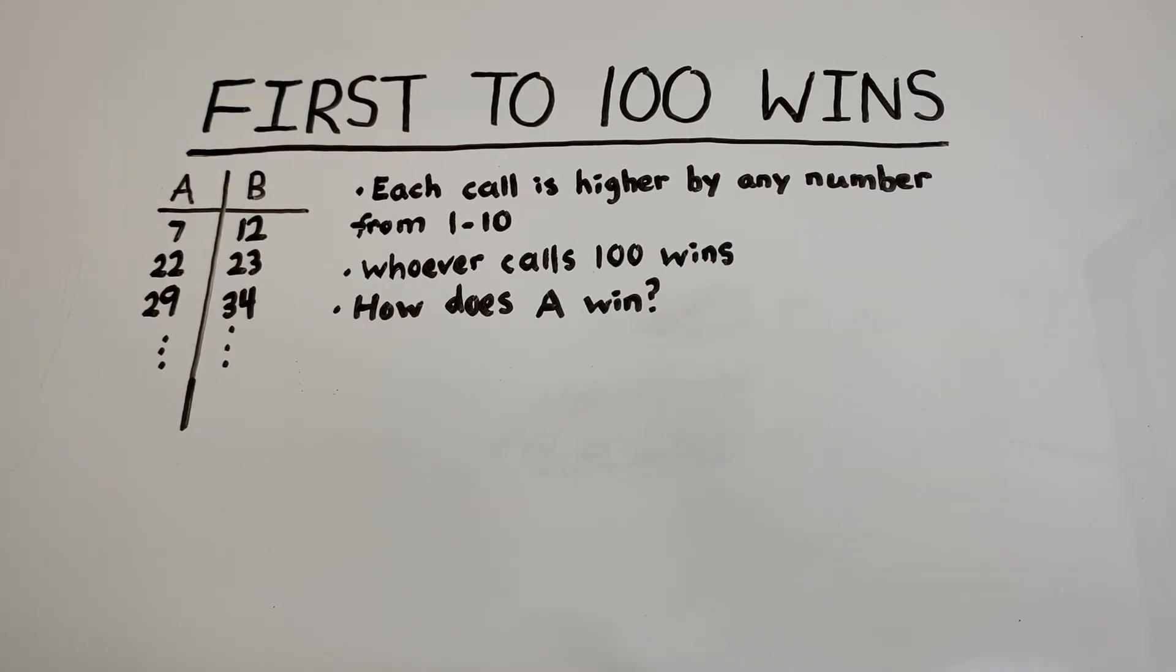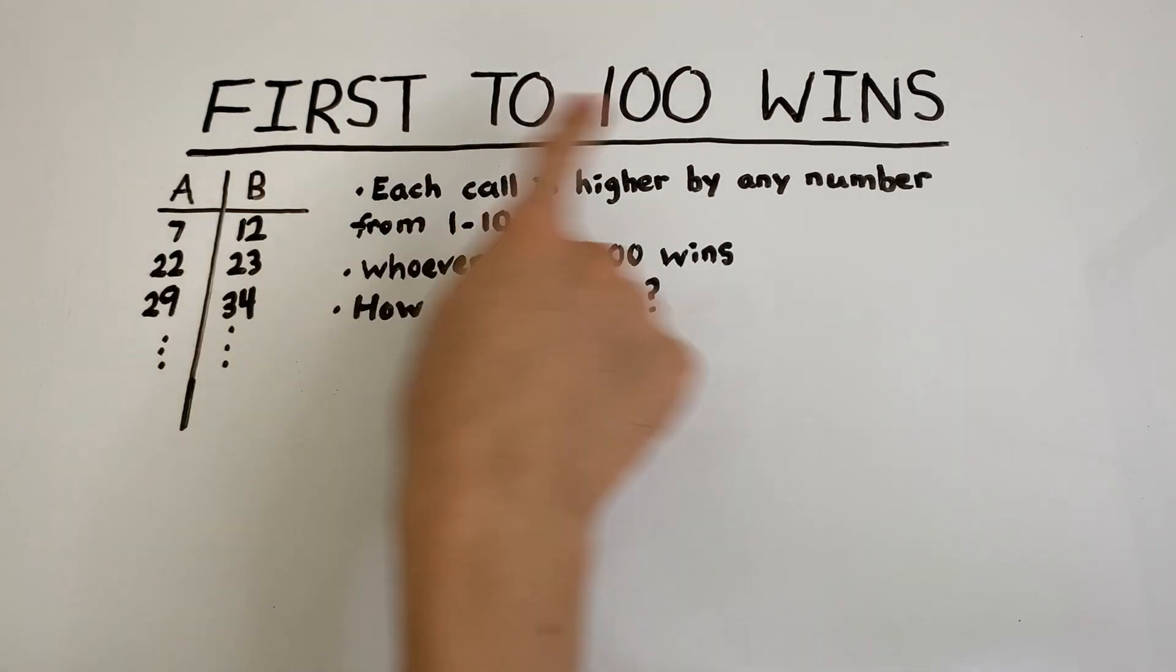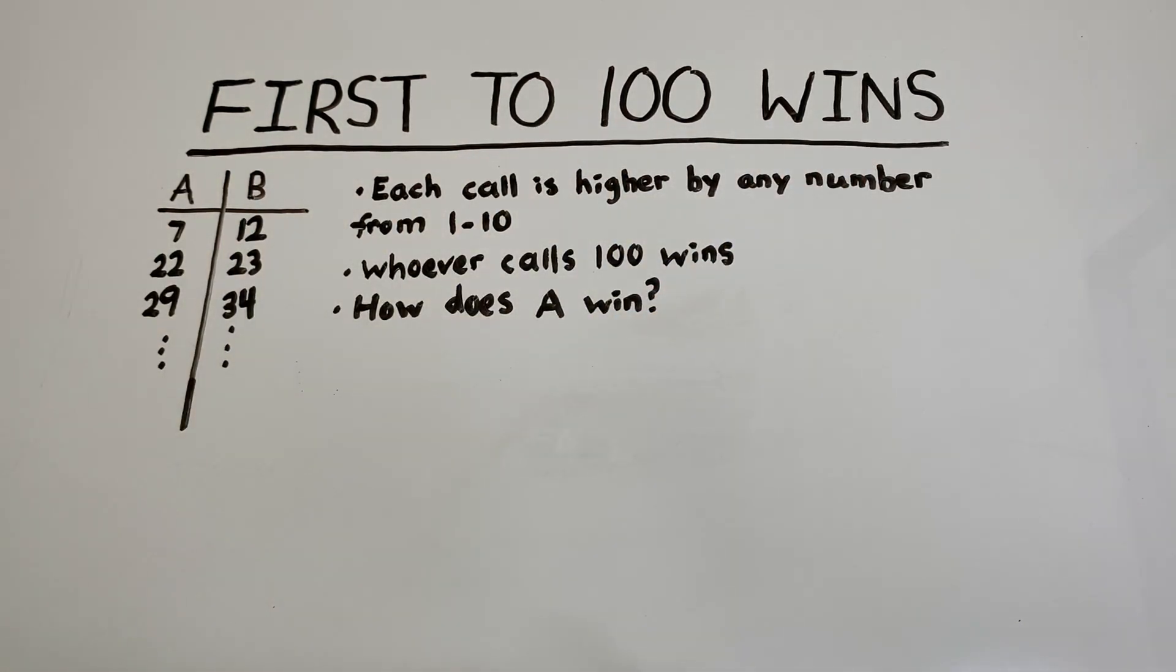So today's game illustrates the concept of working backwards to find a forced sequence and a forced play. So let's take a look. We have two players A and B and they're both playing a game called First to 100 Wins.